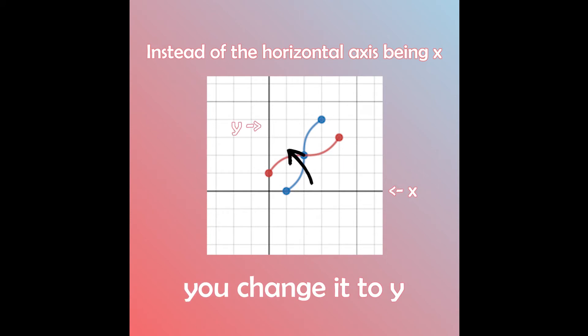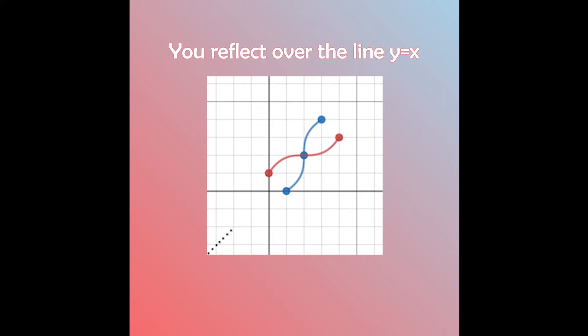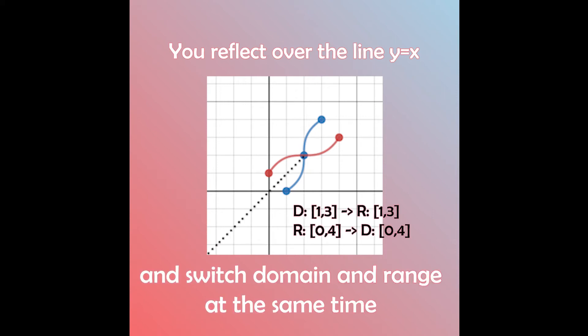you change it to a y. You reflect over the line y equals x and switch domain and range at the same time.